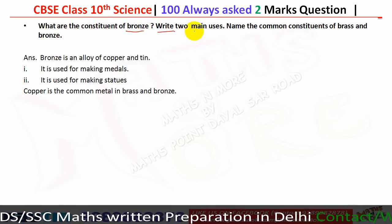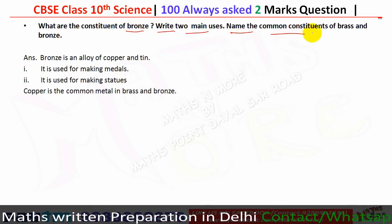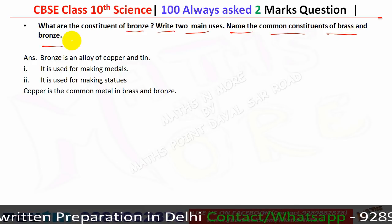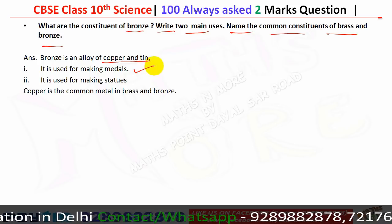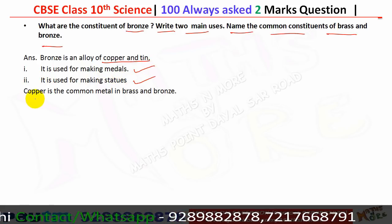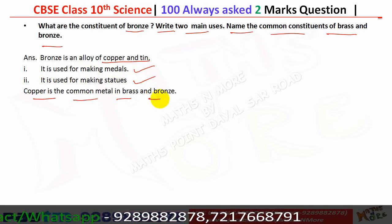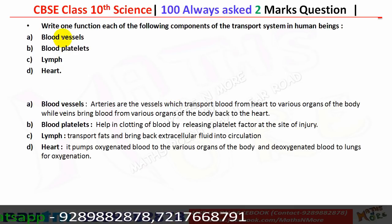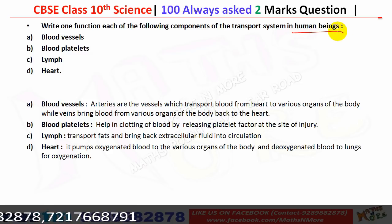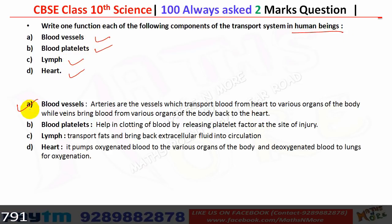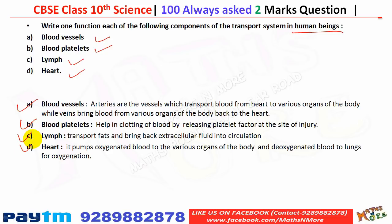Bronze is an alloy of copper and tin; it is used for making medals and statues. Copper is the common metal in both brass and bronze. The four components of the transport system in humans — blood vessels, platelets, lymph, and heart — each have specific functions that you should learn from your textbook.